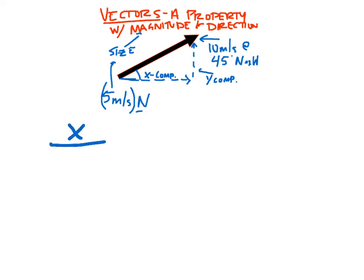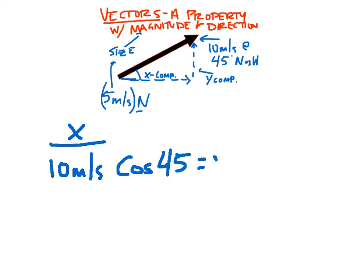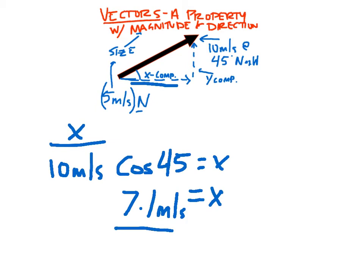The x part of this vector is going to be 10 meters per second — that's my hypotenuse — times the cosine of 45 degrees. That gives me the x component. We're just trying to find this side of the triangle. So 10 cosine 45 in our calculator is 7.1 meters per second. For that 10 meters per second, 7.1 meters per second is in the x direction.